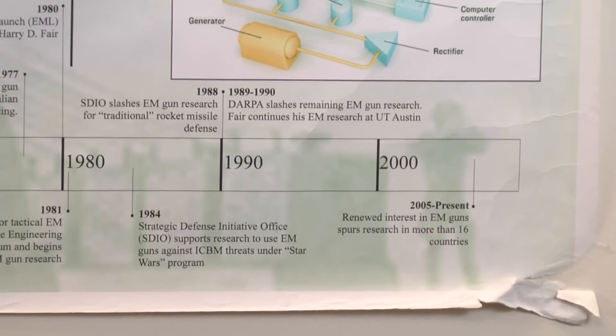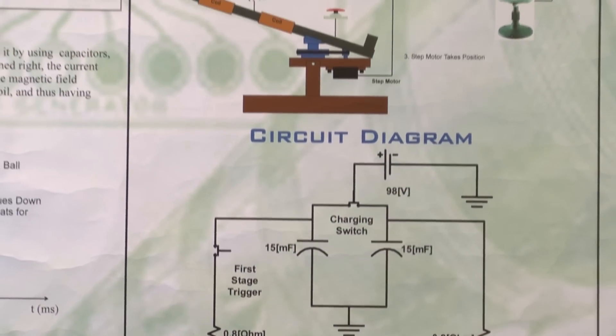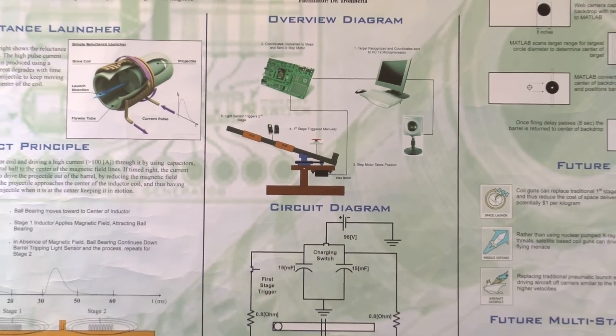The timeline continues, and then if we really need more basic information we know to go over to the top left where they have an introduction into what coil guns are.